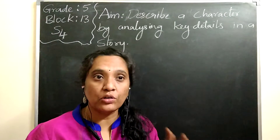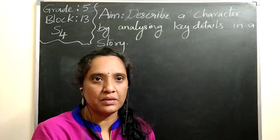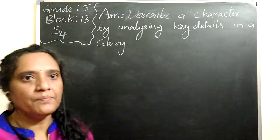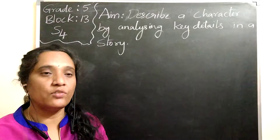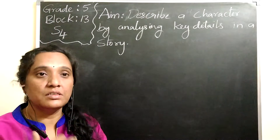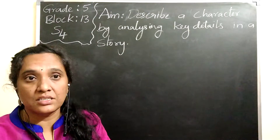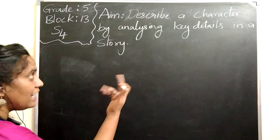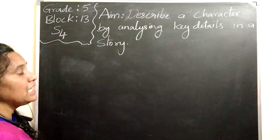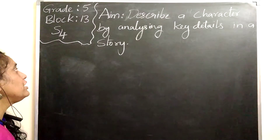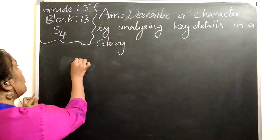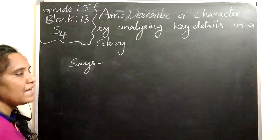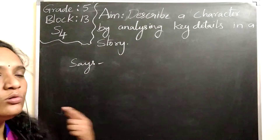So in the story we want to take some key details about that character and then describe that person. The adjectives — we can say the describing words — or we can use some sentences to describe about a person, by analyzing the key details. The key details mainly are about what does he say.